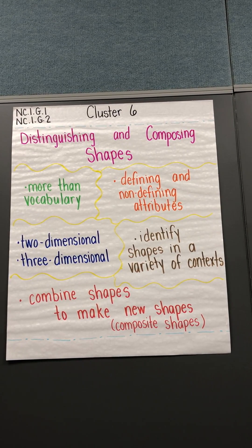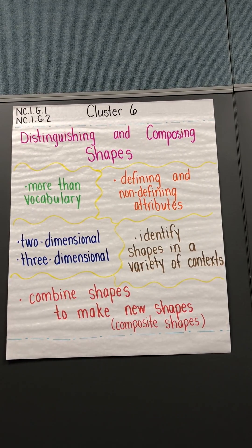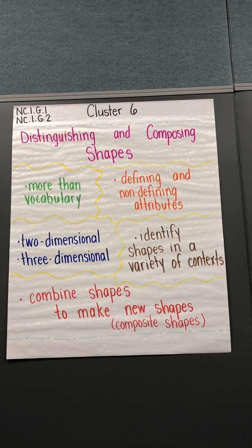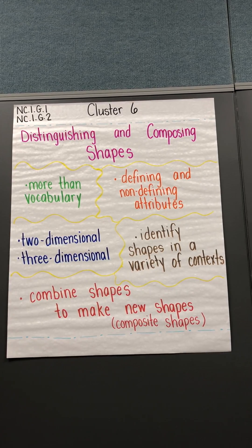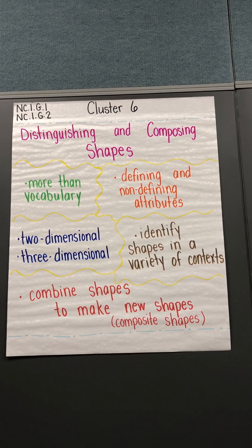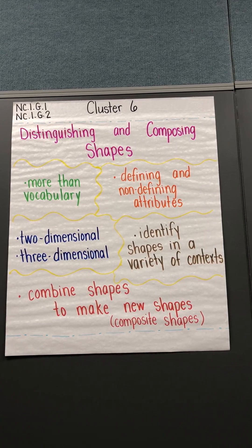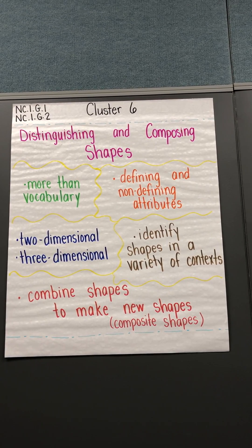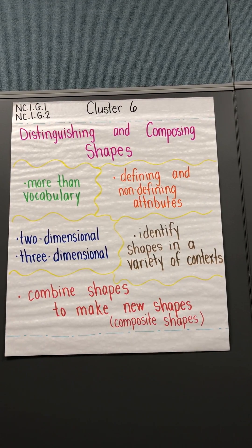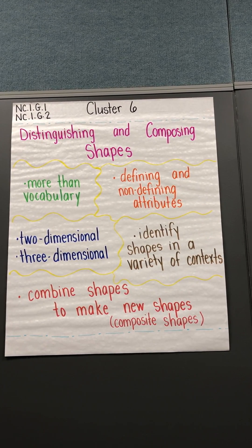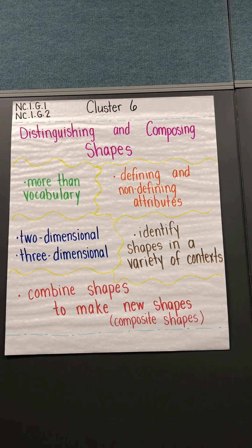You need to also be very careful with commercially prepared materials. They usually will have a rhombus identified as a diamond, and a diamond is not a mathematical term.